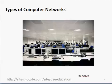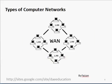WAN is a wide area network and it covers a huge geographical distance. Its example is the internet, which covers the whole world. A WAN is a large combination of LANs — it is a large combination of LANs within a city or within a country.